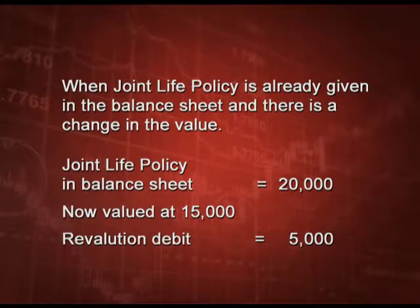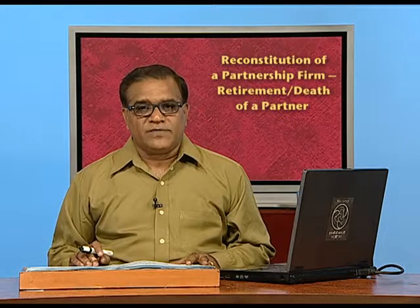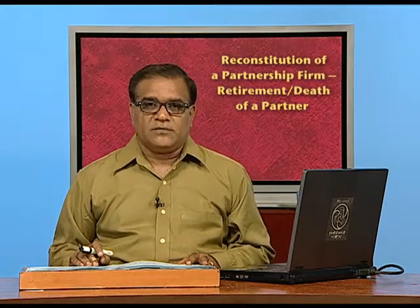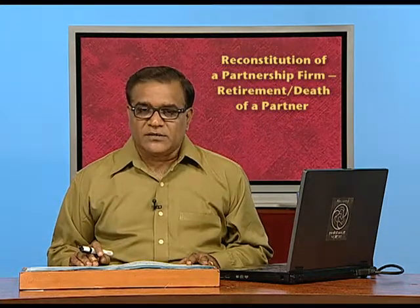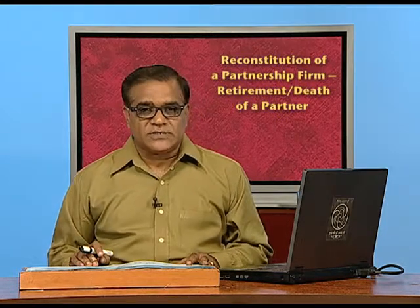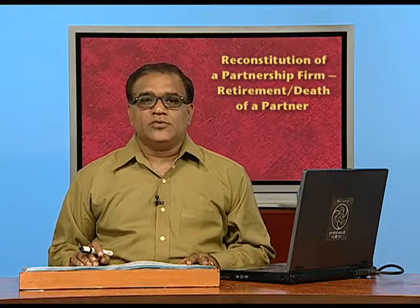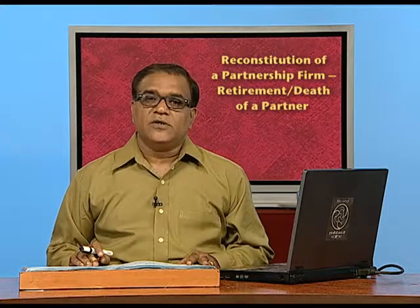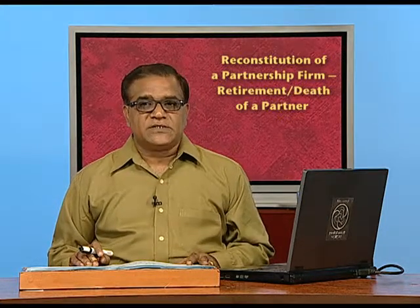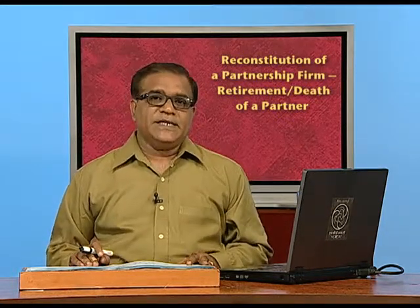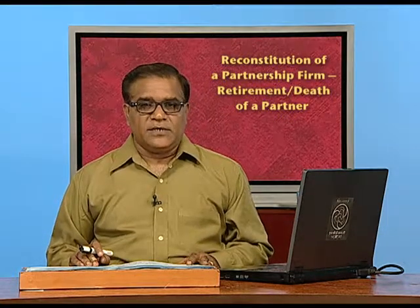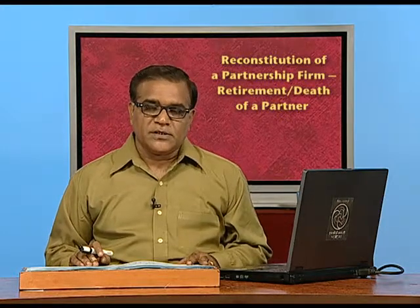In today's discussion we have understood: how to calculate goodwill, how to adjust goodwill, how to calculate the amount payable to a retiring partner, the provisions of section 37 of the Indian Partnership Act — which says you can get a proportionate share of profit or 6 percent per annum, whichever you prefer — and all three cases of joint life policy treatment in retirement. In the next class, we are going to discuss death of a partner and how to calculate profits on the basis of turnover.